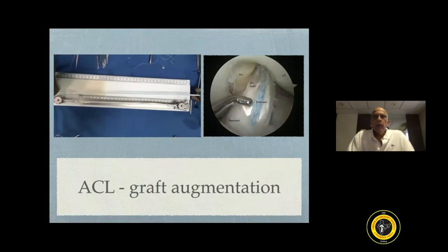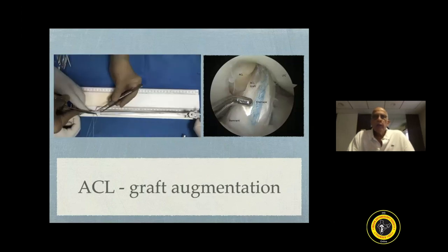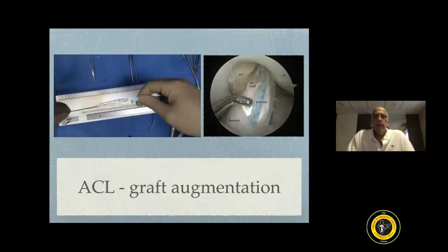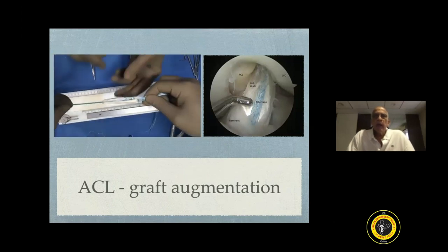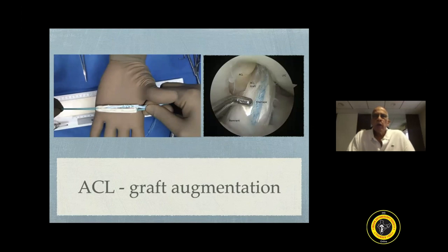Once you have the graft, you need to find out whether the graft diameter and length is adequate. If you feel that the graft diameter is inadequate, one can augment these with synthetic material like high-density polyethylene tapes, as is shown in this video.